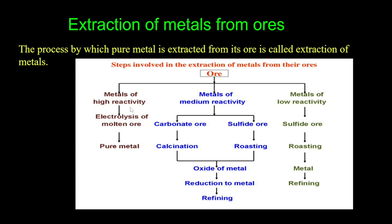Metals are divided into three types based on reactivity: high reactivity, medium reactivity, and low reactivity. Metals of high reactivity include sodium, magnesium, and calcium. These metals are extracted by electrolysis of their molten ore — they are brought to a molten state and pure metal is extracted through electrolysis.